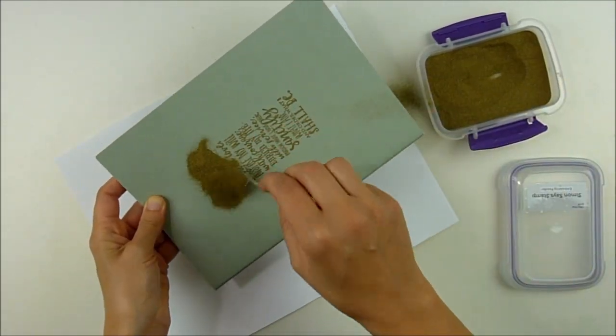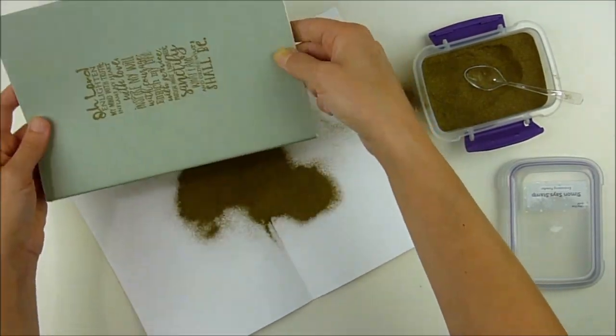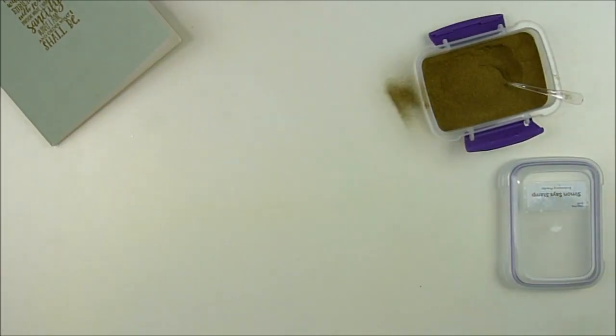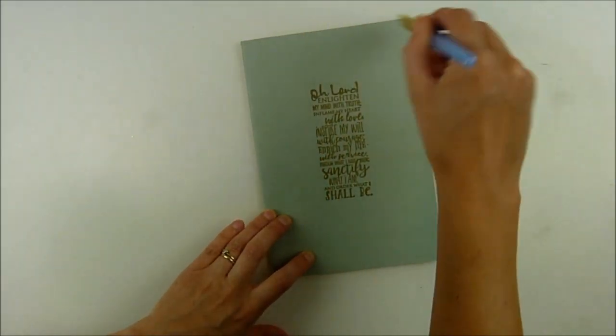It worked really well. I didn't end up with any embossing powder sticking anywhere that I didn't want it, which was really nice. I pulled out and dumped my extra back in, and then I did pull out just a large paintbrush just to make sure that there wasn't any little stray bits of powder that I couldn't see and quickly brush them off. Just with the texture there, I wanted to make really sure I didn't have gold embossing powder in any extra spots that I didn't want.